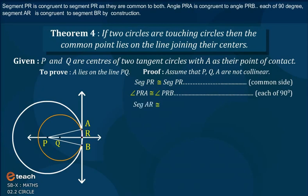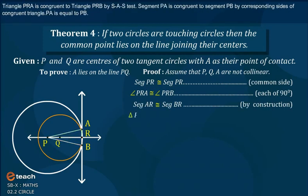Segment AR is congruent to segment BR by construction. Triangle PRA is congruent to triangle PRB by SAS test.